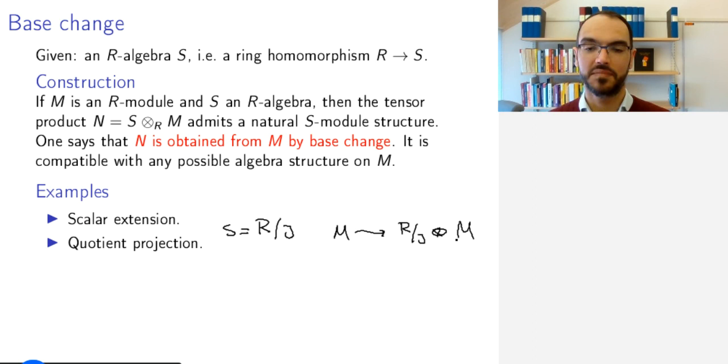Localization is another way. If S is R localized at some prime ideal, then I can localize M at a prime ideal. So I map M to R_P ⊗_R M, which is M_P.